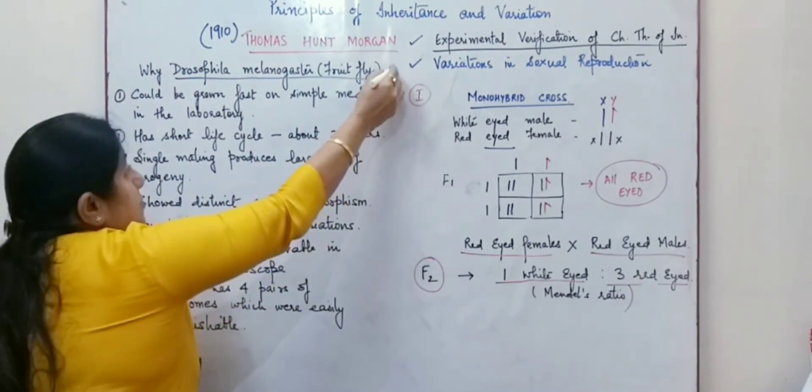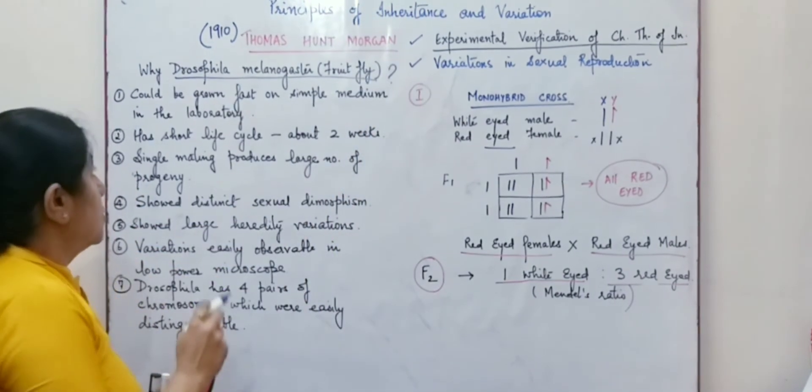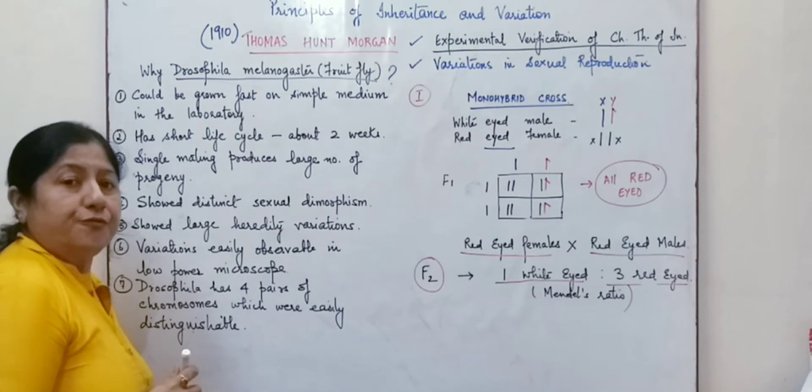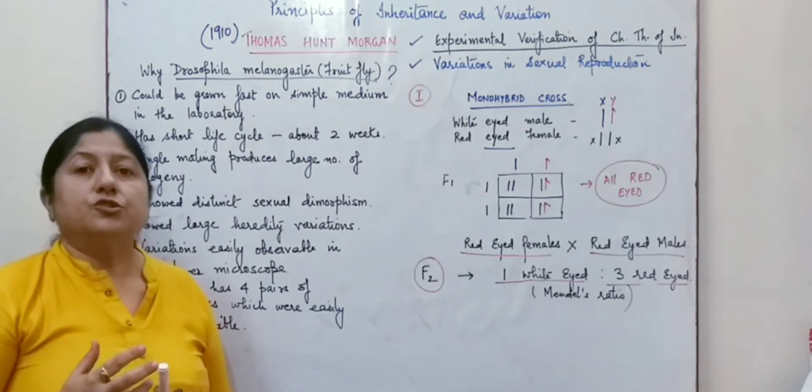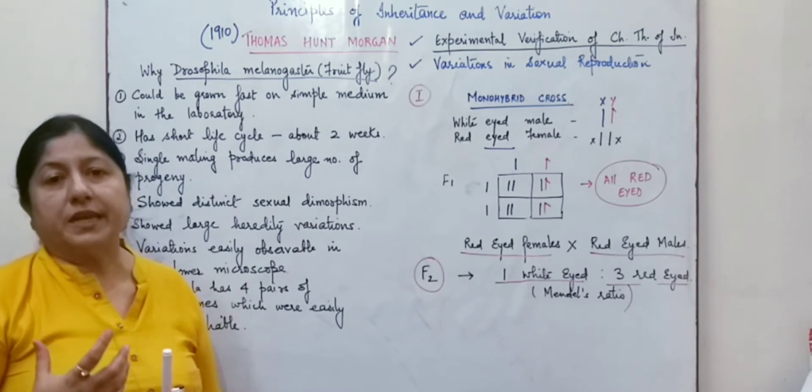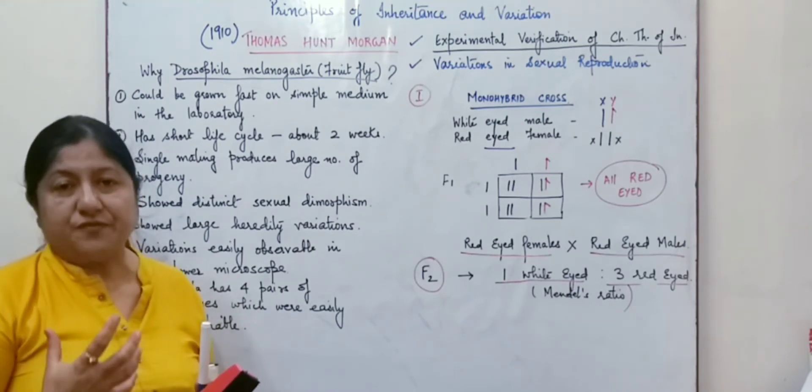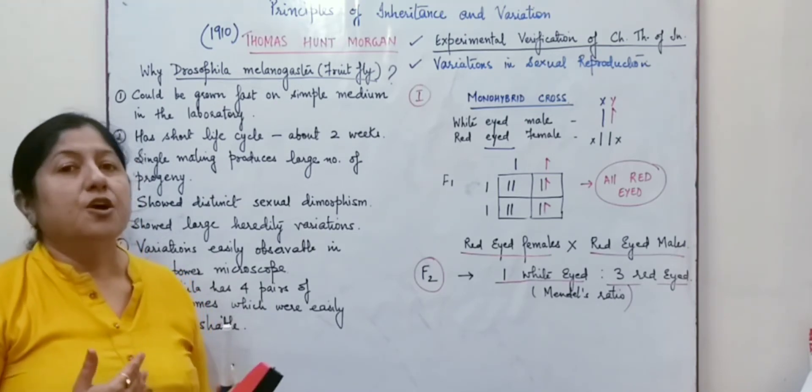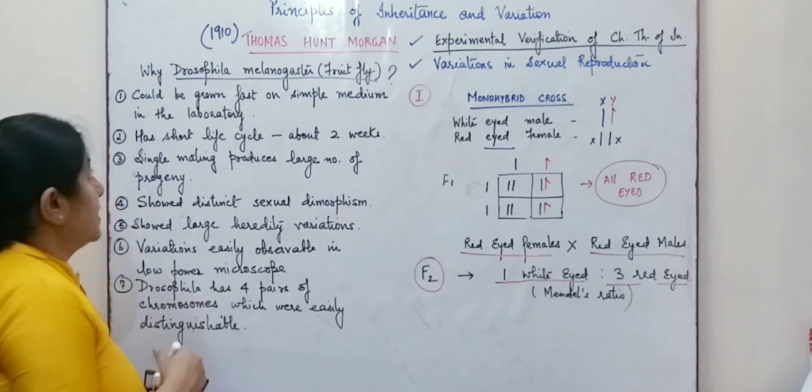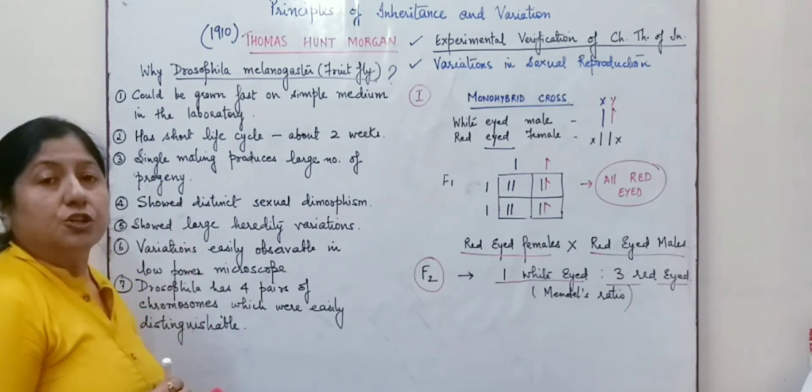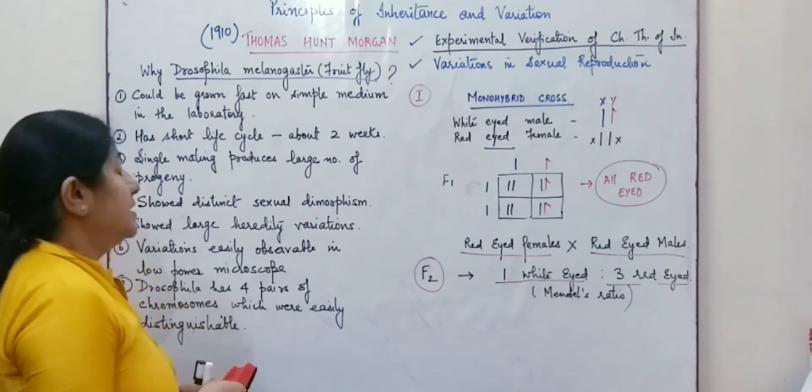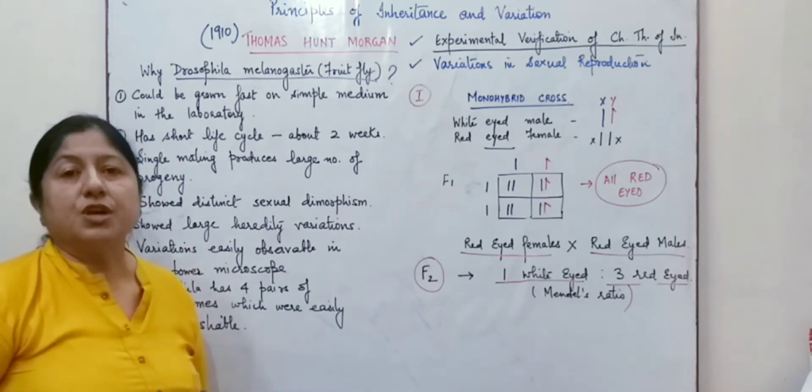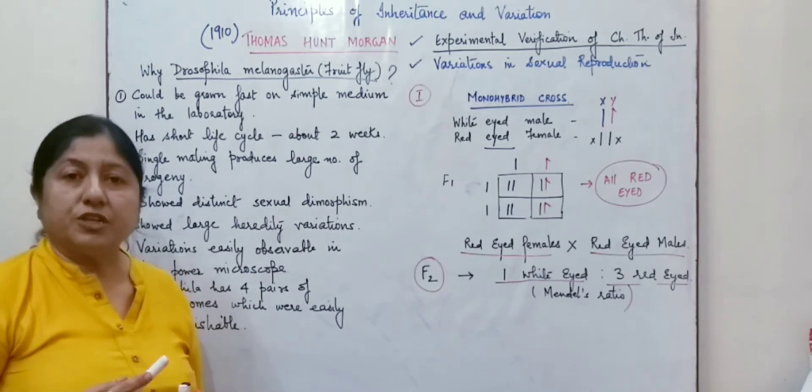Not much complicated or specific conditions were required for growing the fruit flies. Also it had a short life span of about 2 weeks approximately and a single mating produced a large number of progeny.